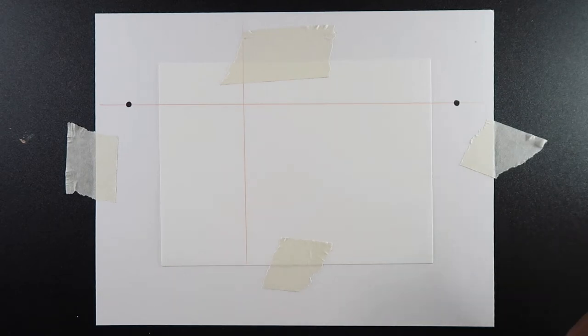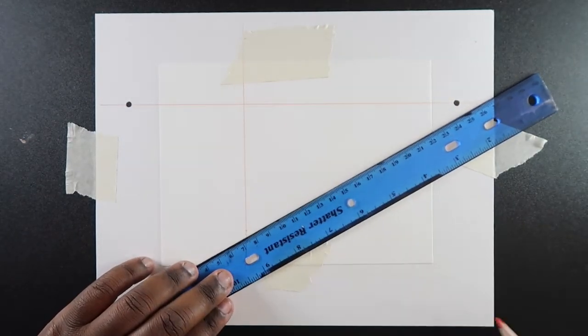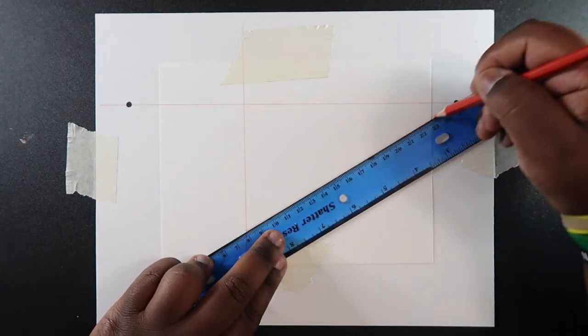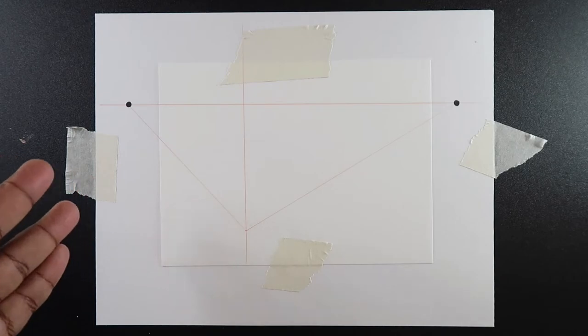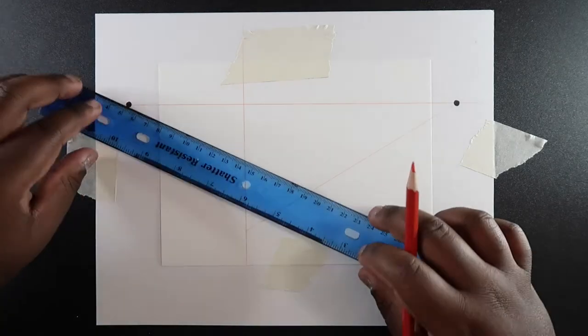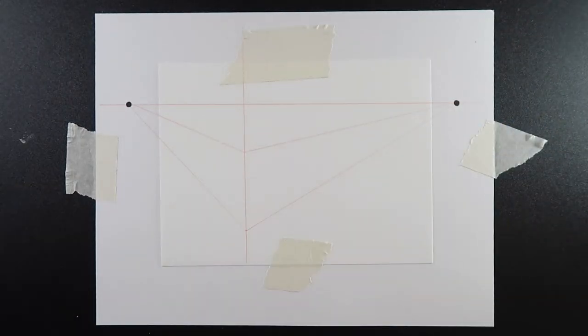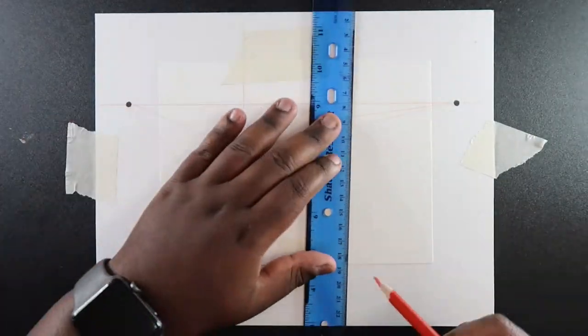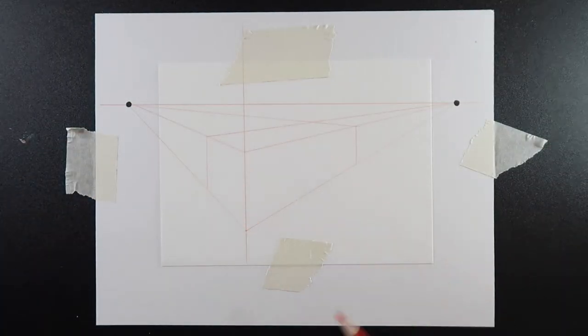So before actually drawing the stairs we're actually going to draw us a rectangular prism. So what I'm going to do is I'm going to pick a point on this vertical line and we're going to connect those two points just like this. And do the same thing with the other side. And we're going to keep drawing stuff like this until we get our rectangular prism in place. Okay and here's a rectangular prism right here.